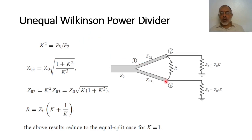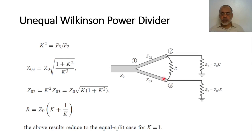Assuming that the power division ratio between port 3 and port 2 equals K squared, the power divider will have different transmission line sections with different characteristic impedances. Instead of square root 2 Z-naught, the characteristic impedance Z-naught-3, which is connected to port 3, would be Z-naught multiplied by the square root of (1 plus K squared) over K. The characteristic impedance Z-naught-2 would be K squared multiplied by Z-naught-3, which can be represented as Z-naught multiplied by the square root of K multiplied by (1 plus K squared).